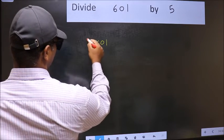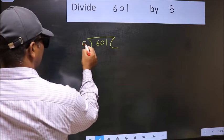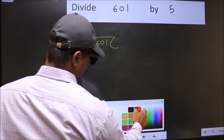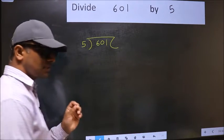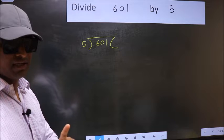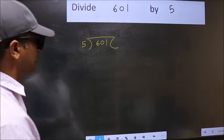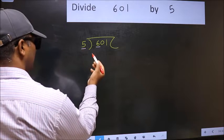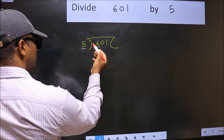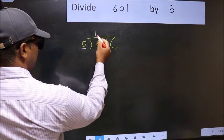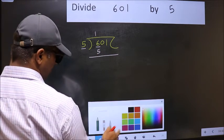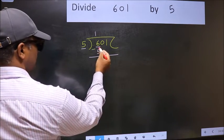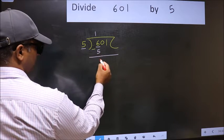601 and 5 here. This is your step 1. Next, here we have 6 and here 5. A number close to 6 in 5 table is 5 once 5. Now you should subtract. 6 minus 5, 1.